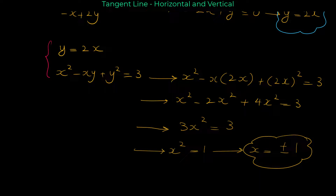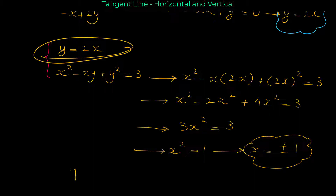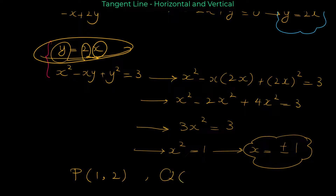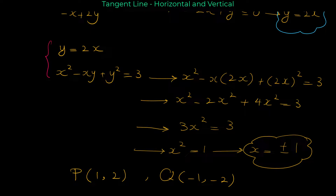Now we have the x-coordinates. Since y = 2x, when x = 1, y = 2, and when x = -1, y = -2. So the points where the tangent line is horizontal are (1, 2) and (-1, -2).